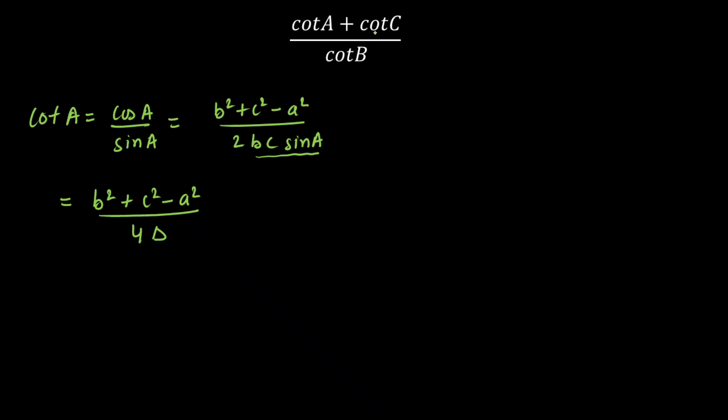So in the similar manner, I can write cot C as cot C will be equal to a² + b² - c² upon 4 delta. Similarly, I'm going to write cot B as a² + c² - b² upon 4 delta.